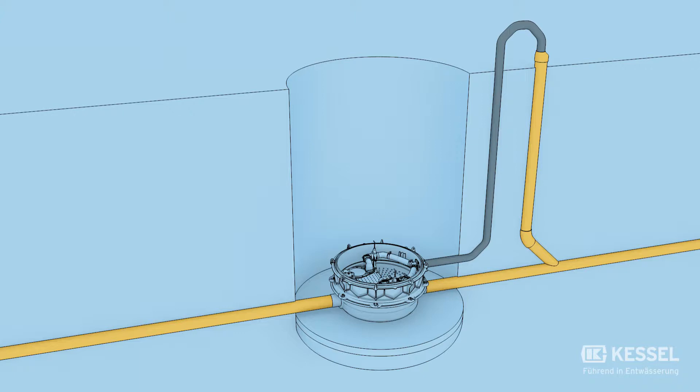In this step, we install the pressure line above and beyond the backflow level and connect the individual line parts by means of a hot plate or electro welding process.